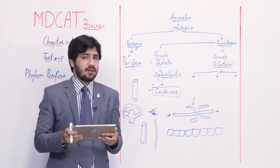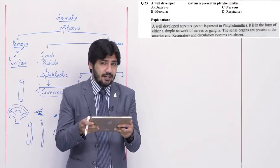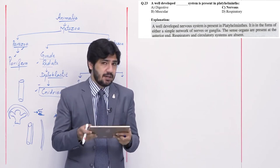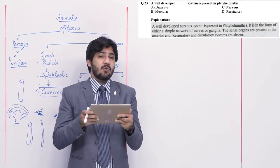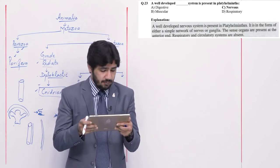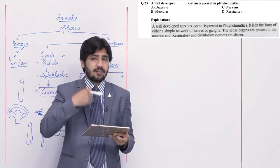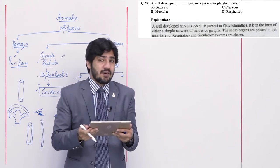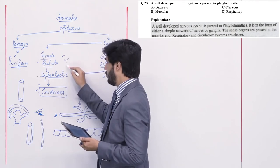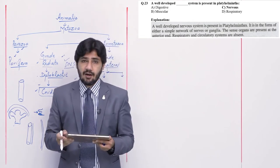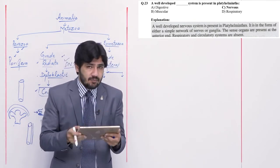Question number 23: a well-developed blank system is present in Platyhelminthes — alpha digestive, beta muscular, charlie nervous, and delta respiratory. The digestive system in Nidarians and early phyla is sac-like with a single opening, so not well-developed. Muscular system is also reduced in these parasites. Within Nidarians (Radiata) there is a diffuse nervous system with no brain. Within Platyhelminthes, for the first time a CNS developed. So the well-developed system is nervous — right option is charlie. Respiratory system does not exist in Platyhelminthes.